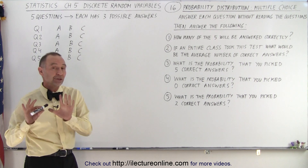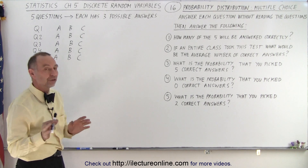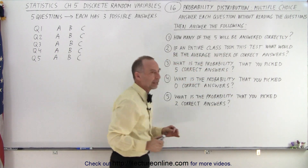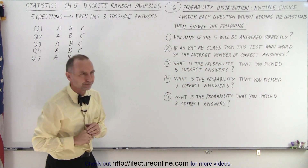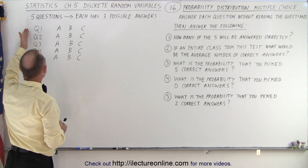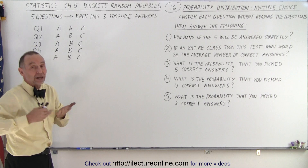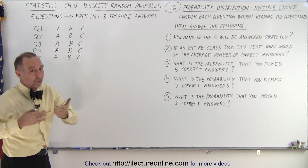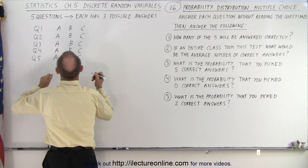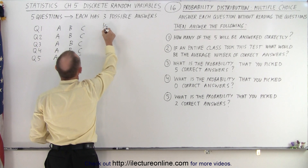After you've done that, you're supposed to answer the following five questions. First of all, how many of the five will be answered correctly? Well, the probability of picking the correct answer in each case would be one out of three. There's three possible answers and only one is correct, so the probability of getting the right answer for question number one would be one out of three.